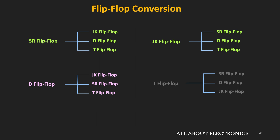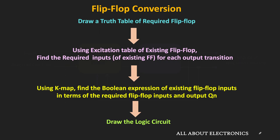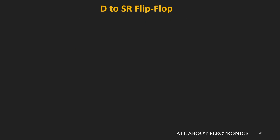In the first two parts, we have seen that during the conversion, we need to design the combinational circuit in such a way that we can convert one flip-flop into the other. For that, we have also seen the different steps which we need to follow during the conversion. By following these steps, now let us convert the D flip-flop into the SR flip-flop.